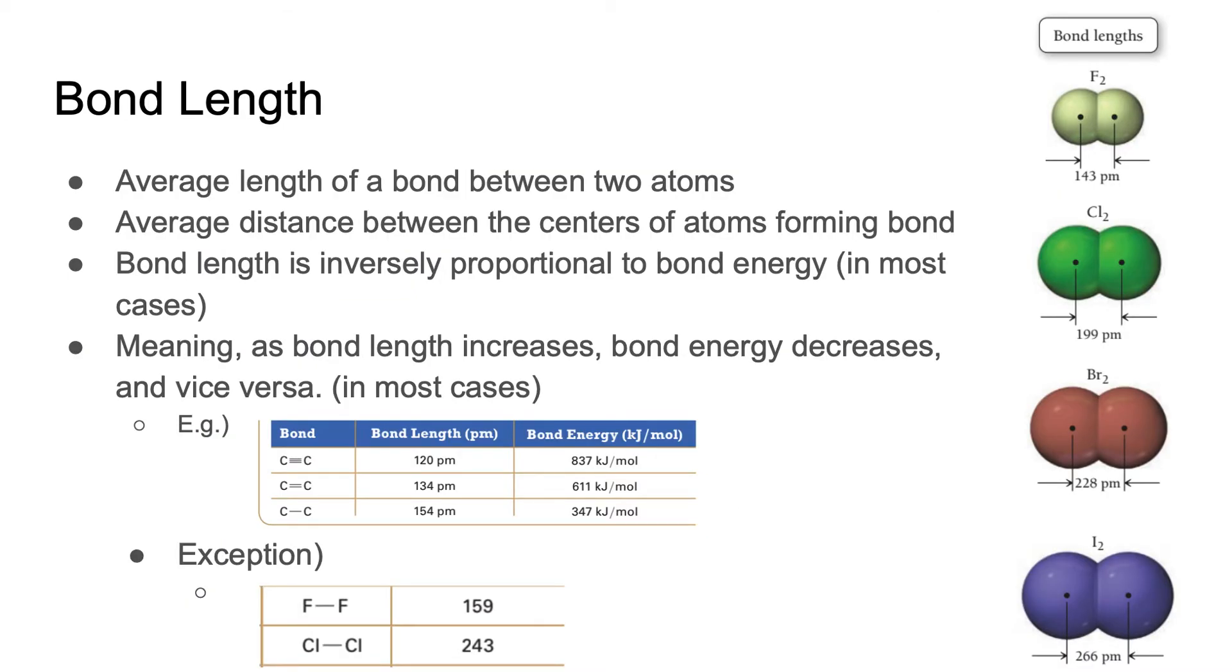Bond length and bond energy is inversely proportional, meaning as bond energy gets greater, the bond length gets smaller, and vice versa. You can think of it as the stronger two atoms are pulling each other, the closer they pull each other.